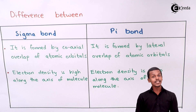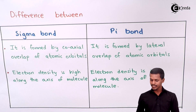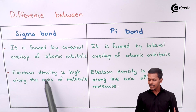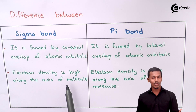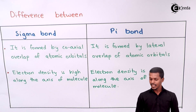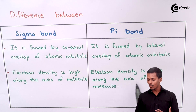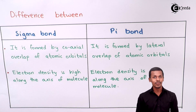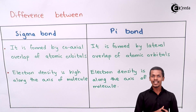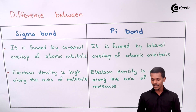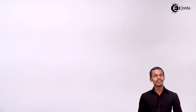The next point is that for the sigma bond, the electron density is high along the axis of the molecule, while for the pi bond, the electron density is zero along the axis of the molecule. I will give you an example that will also clarify the first point about the difference between sigma bond and pi bond.